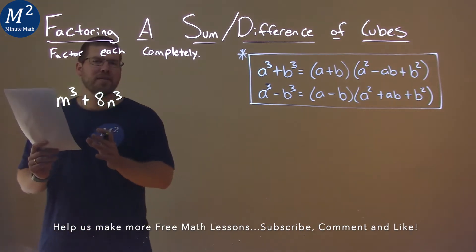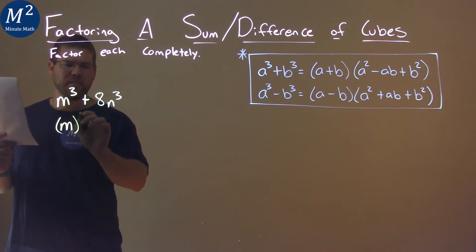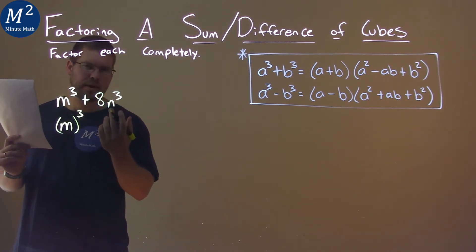Well, we want to write this as a sum of two cubes. This is kind of easy for the n. m to the third power is the same thing as in parentheses of m to the third power.